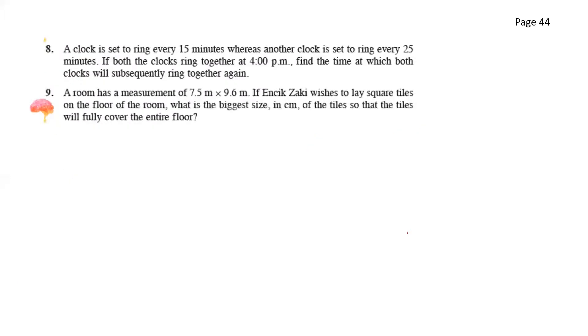Next for number 8, a clock is set to ring every 15 minutes whereas another clock is set to ring every 25 minutes. If both the clocks ring together at 4 pm, find the time at which both clocks will subsequently ring together again. So here we'll have to find the lowest common multiple. For number 8, we have 15 and 25. So that will give us 5 here. Dividing it by 5 gives us 3 and 5.